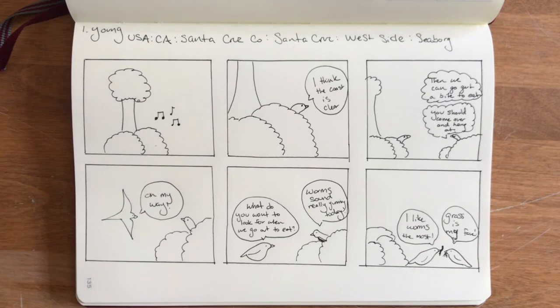Always remember to add your name and your location at the top of your journal entry. This activity is really fun because by creating your own story map and drawing your own comic book, you're creatively engaging with these bird behaviors in a way that's going to help you retain that new knowledge and information.